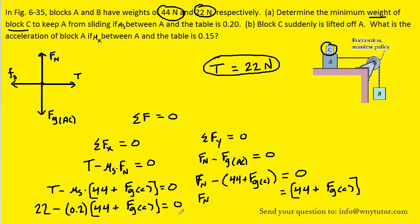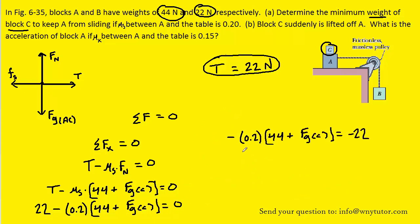Let's subtract 22 from both sides of this equation. We'll carry our work up here to make some room. Divide both sides by negative 0.2, and then subtract both sides by 44. And we obtain 66 Newtons for the force of gravity acting on object C, which again is the same thing as the weight of object C. So that's the answer to part A.